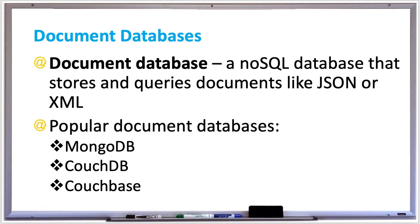There's also CouchDB, which is an open source database by Apache. CouchDB was the very first document database and it stores data in JSON format and only supports eventual but not strict consistency.